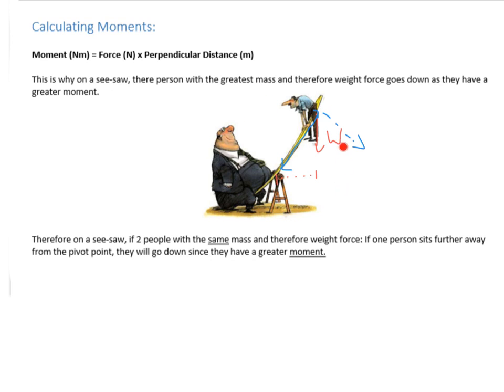Which is why he goes down and this person ends up going up. So one way you can increase your moment is by increasing the weight force by increasing the mass. The other is by increasing the perpendicular distance. So if you have two people of the same mass and weight force on a seesaw and one sits further back or further away from the pivot point, they'll have a greater moment and so it will rotate in the direction of their weight force and so they'll go down.